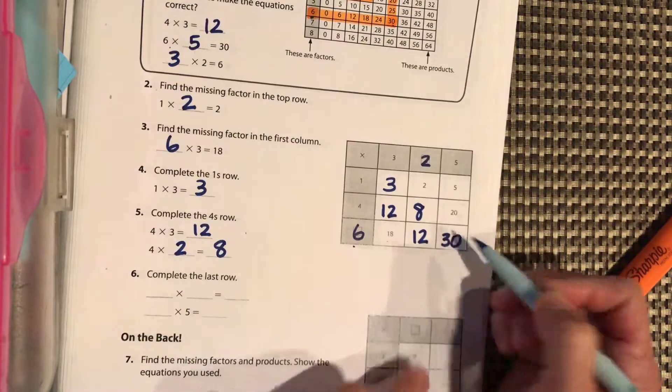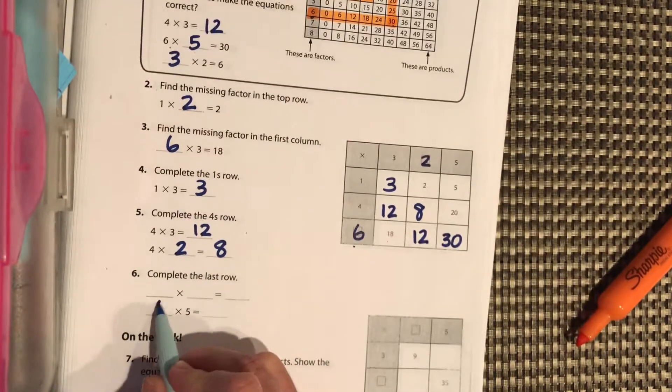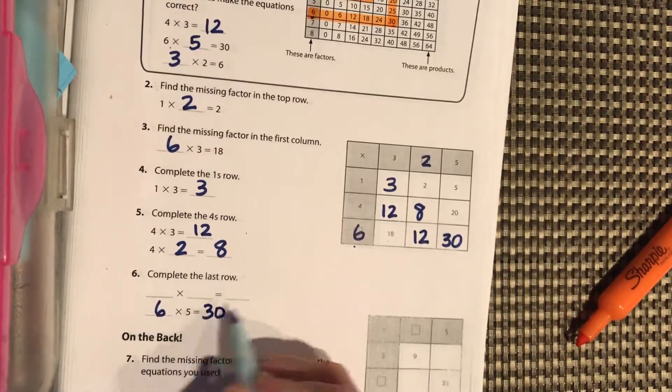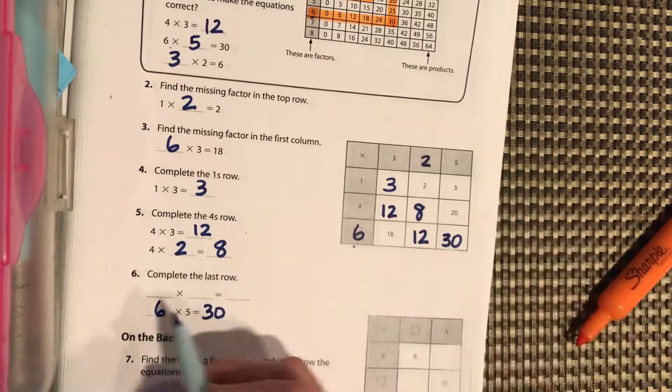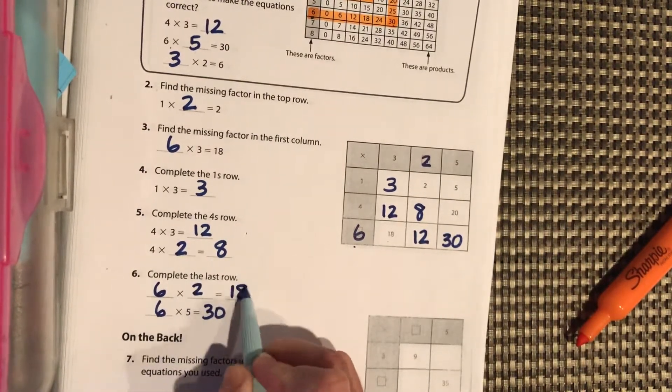It should be 30. Okay, so 6 times 5 equals 30, and then the other one we worked out was 6 times 2 equals 12.